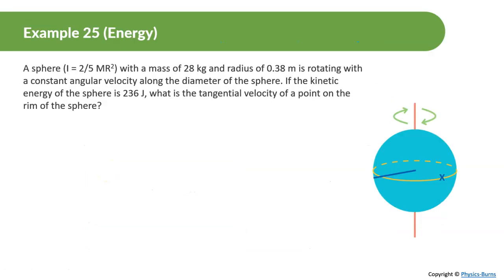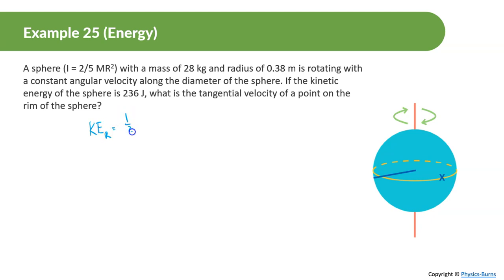Moving on to a simple example: a sphere with a moment of inertia of two-fifths mr squared, a mass of 28 kilograms, and a radius of 0.38 meters is rotating with a constant angular velocity along its diameter. If the kinetic energy of the sphere is 236 joules, what is the tangential velocity of a point on the rim of the sphere?